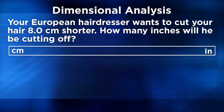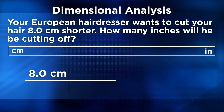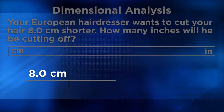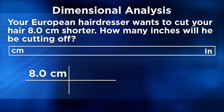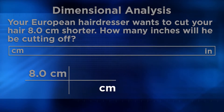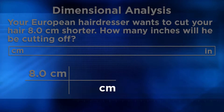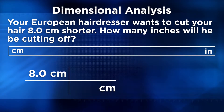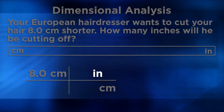Notice that CM appears on the far left, because that's the unit we're starting with. And on the far right, you see IN for inches — the unit we're converting to. Next, it'll help to build what's called a conversion chart, which is similar in shape to the letter T. Then start putting the numbers and units on the chart. In this problem, the hairdresser wants to cut 8.0 centimeters of hair, so put that number along with the units in the upper left-hand corner of your conversion chart.